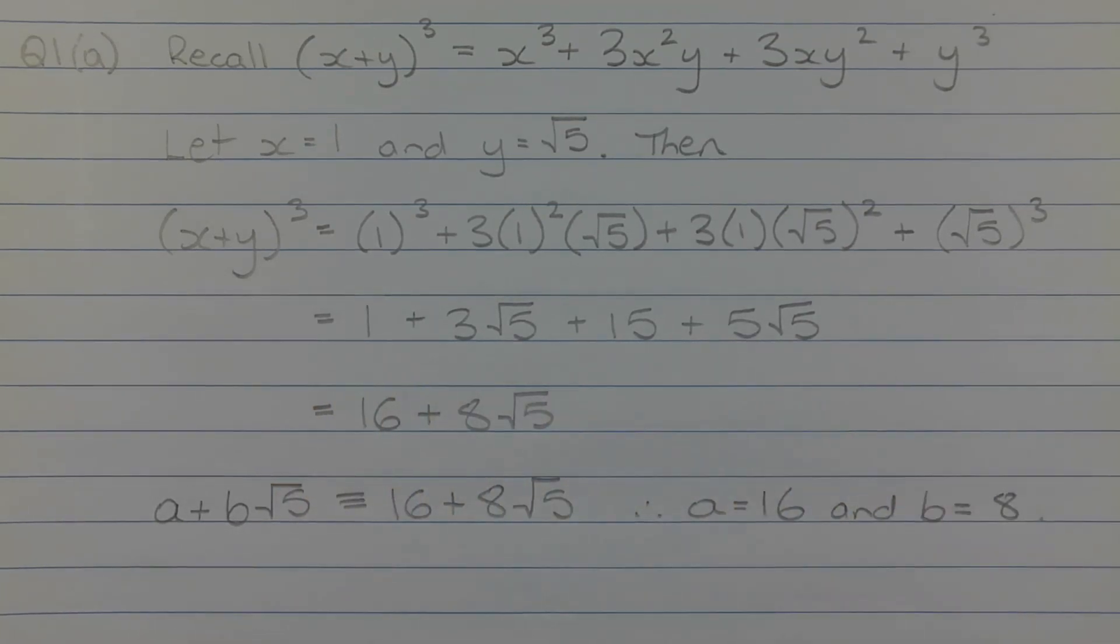Collecting the like terms, we have 1 plus 15 is equal to 16, and 3 root 5 plus 5 root 5 is equal to 8 root 5.